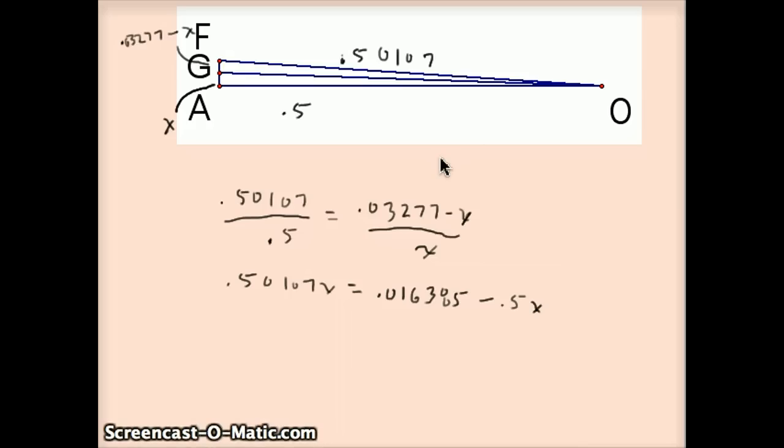Angle bisector theorem says that I can set up this proportion, 0.50107 over 0.5 equals 0.03277 minus X over X. Cross multiply and get this equation, 0.50107X equals 0.016385 minus 0.5X. Add 0.5X to both sides to get 1.00107X equals 0.016385.